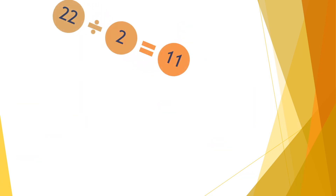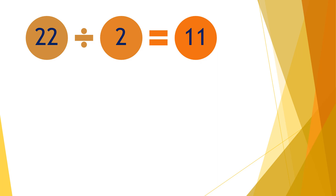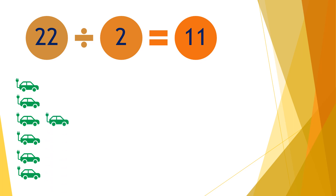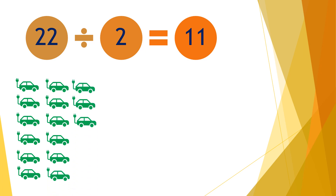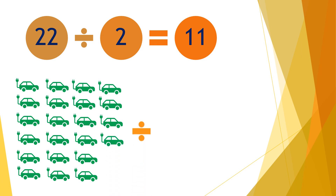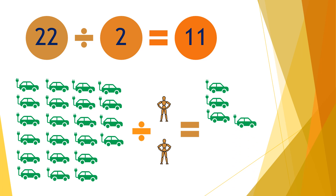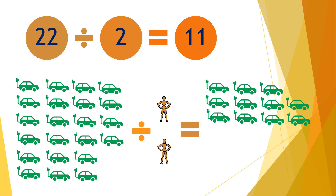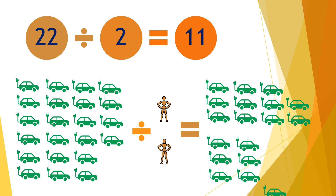Moving on to the next question: twenty-two divided by two equals eleven. So if you have twenty-two cars and divide them by two people, each person will receive eleven cars — one through eleven for each person.